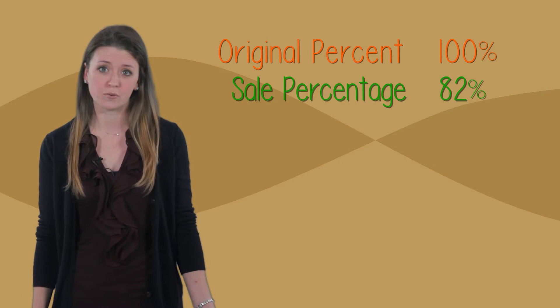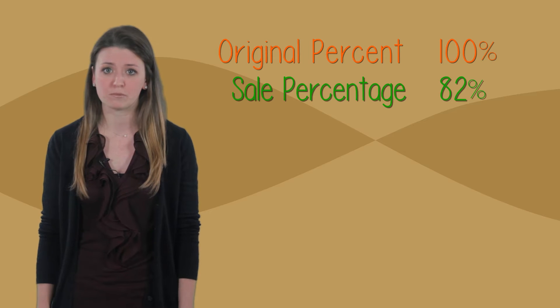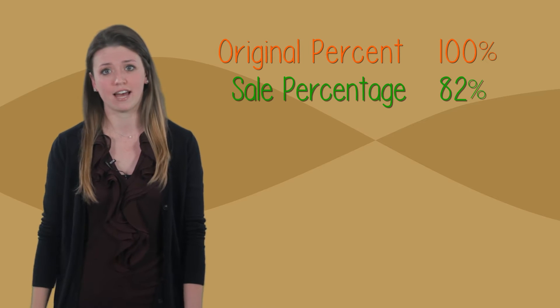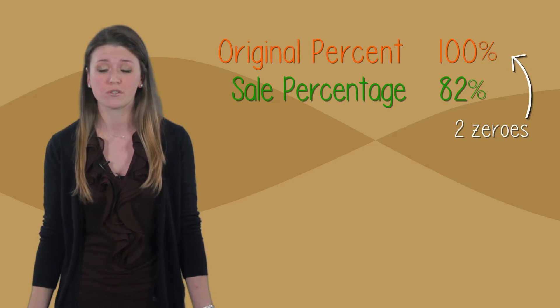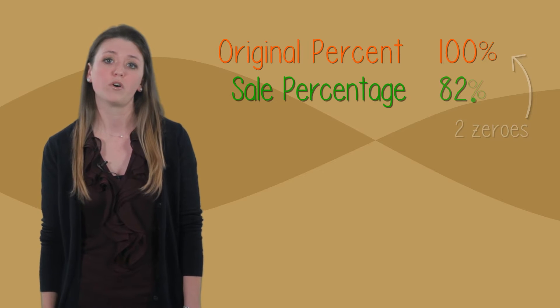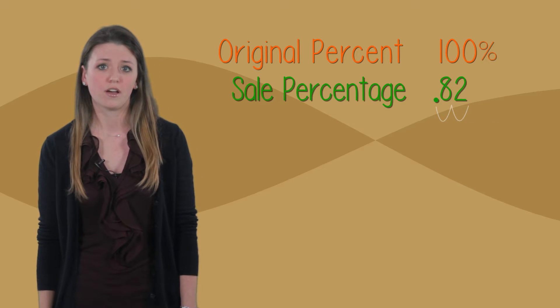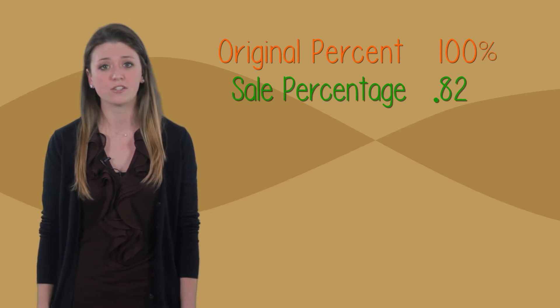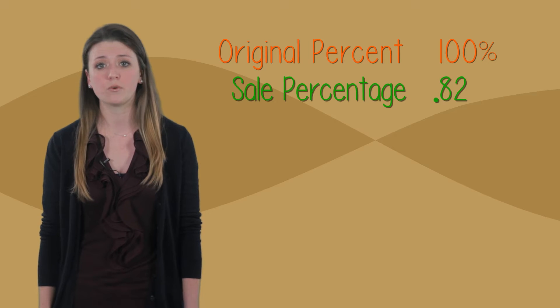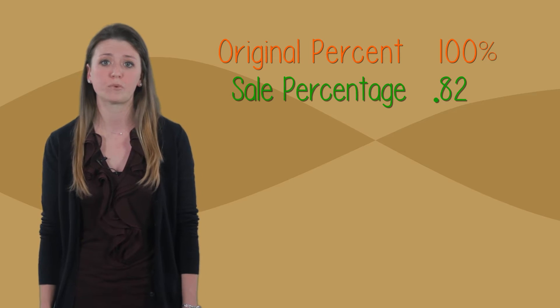To turn 82% into a decimal, I have to move my decimal point two spots to the left because there are two zeros in 100. We move one, two, and now we have our decimal, 82 hundredths. 82 hundredths represents our 82% sales price.